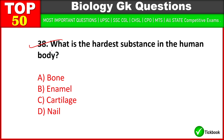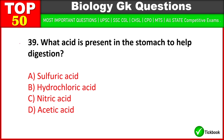What is the hardest substance in the human body? Enamel is the right answer. What acid is present in the stomach to help digestion? B: hydrochloric acid.